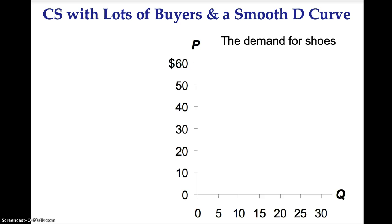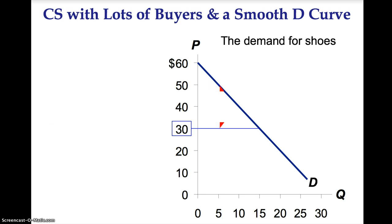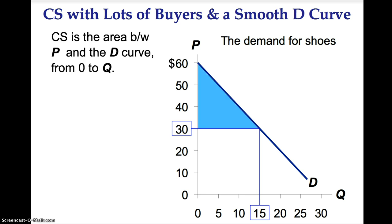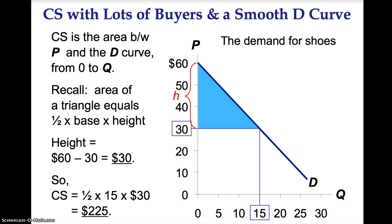Now let's look at consumer surplus when we have many buyers and a smooth demand curve. Suppose we are analyzing the demand for shoes. Price per pair is measured on the vertical axis and quantity measured in thousands of pairs is on the horizontal axis. The demand curve is smooth and downward sloping. At a quantity of 5,000, the marginal buyer is willing to pay $50 for a pair of shoes. Suppose the price of shoes is $30, then consumer surplus is $20. Consumer surplus is the area between the price and the demand curve from zero to the quantity being sold. The area of a triangle equals one-half the base times the height. The height in this case is 60 minus 30, which equals 30. Consumer surplus equals one-half times 15 times 30, which equals $225.